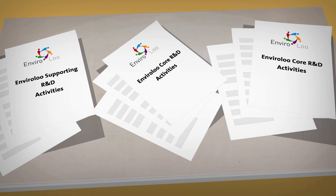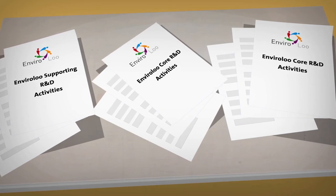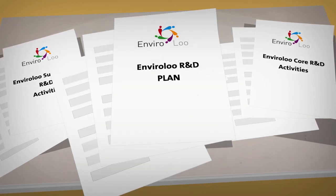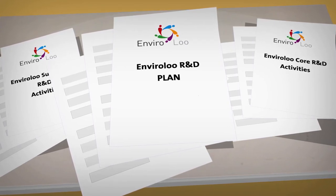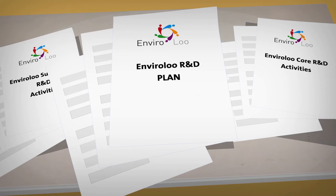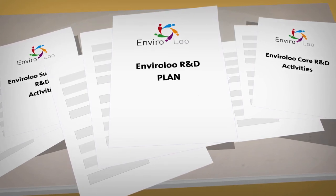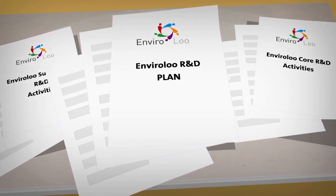As part of EnviroLoo's record keeping process, the company developed project documentation which included an R&D plan. Whilst this is not compulsory when submitting a claim, it displayed evidence of good planning and governance processes that form strong supporting evidence for compliance purposes.